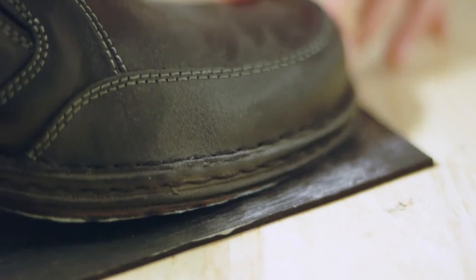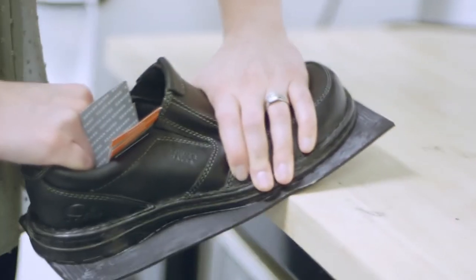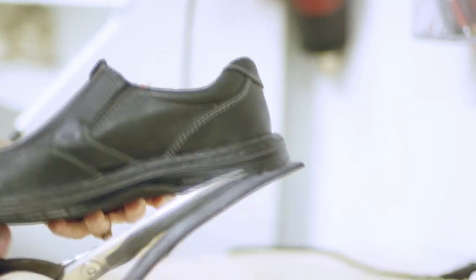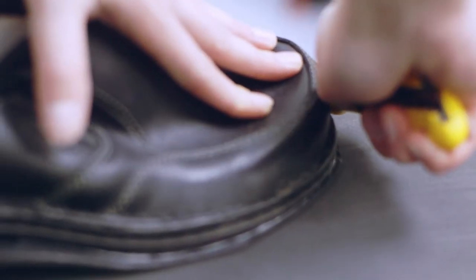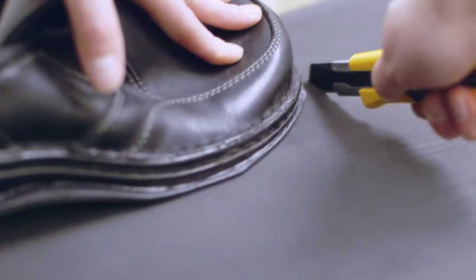You glue it on, and then after that you smooth the transition properly and then glue the sole back on. Clean up the edges around the shoe and your shoe is good to go.